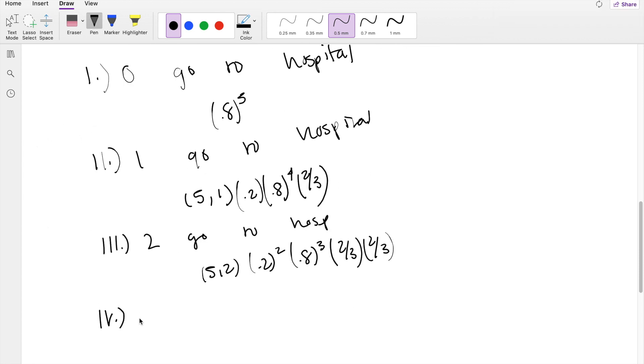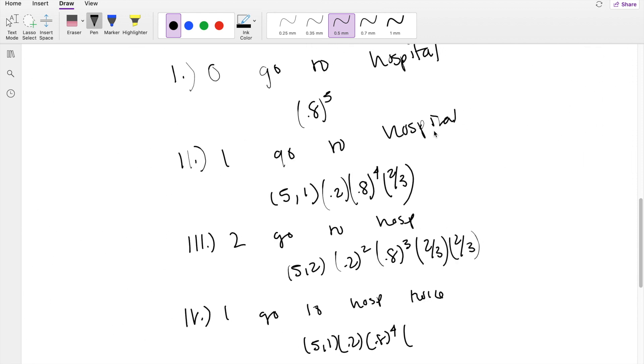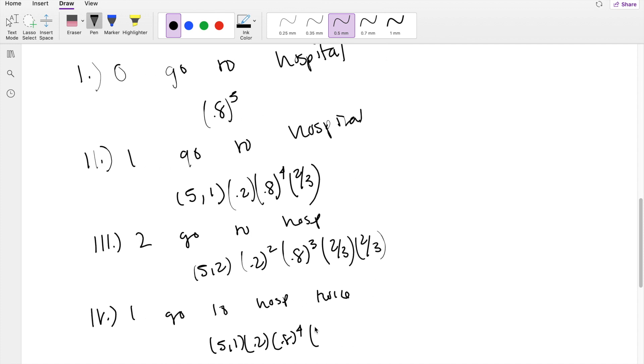And case number 4 is when one of them goes to the hospital twice. So that happens with 5 choose 1, 0.2 raised to the first power, 0.8 raised to the fourth. And instead of them going once, the probability X equals 2, so they're admitted twice. So that's 2/9.